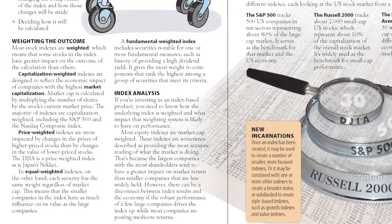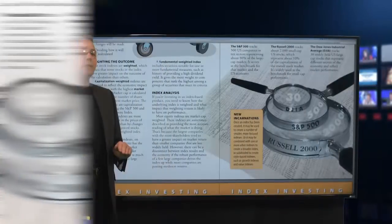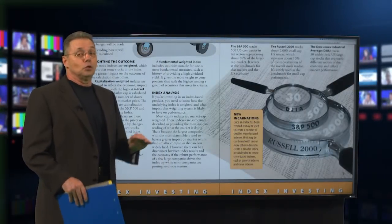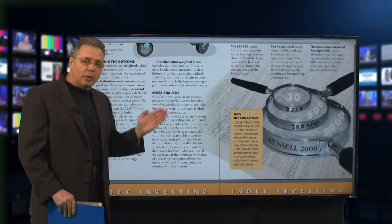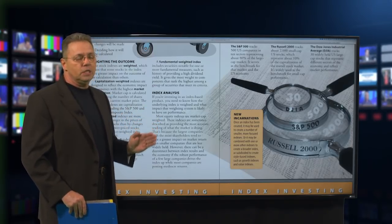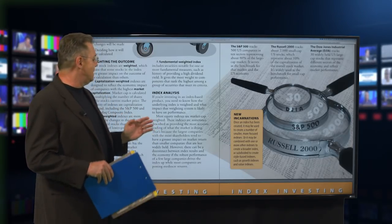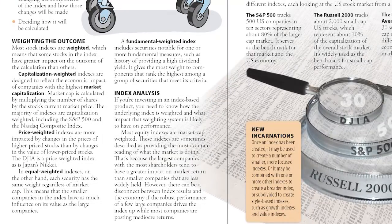In equal-weighted indexes, each security has the same weight regardless of market cap. If you have socialism in indexing, there it is — everybody is treated equally and weighted the same. The fundamental-weight index includes securities notable for one or more fundamental measures, such as a history of providing high dividend yield.